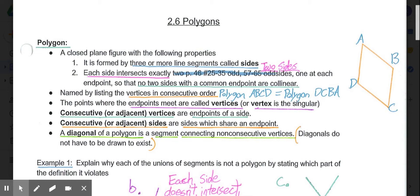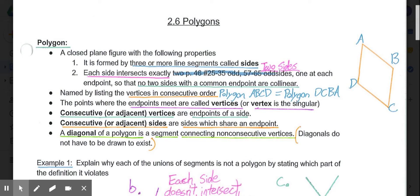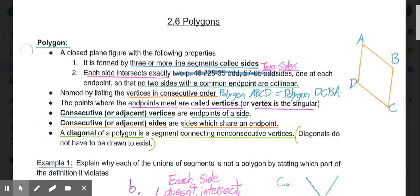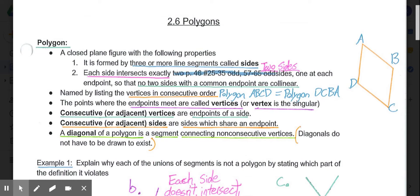A polygon, to begin with the definition, is a closed plane figure with the following properties. Closed plane figure, meaning it exists on a plane and it's closed, such as all the segments meet with no openings. To dive further into that, the following properties are part of the definition of polygons.